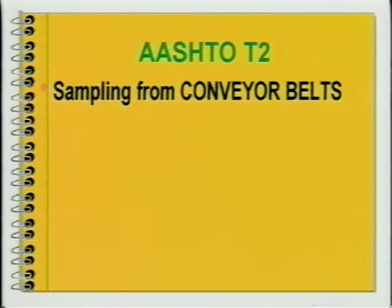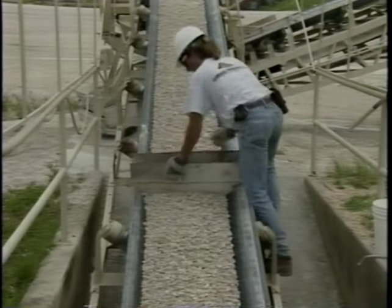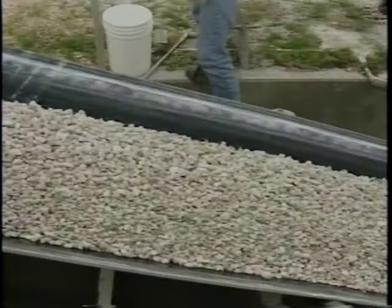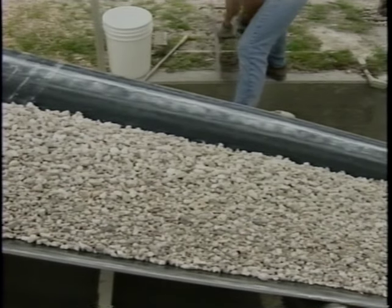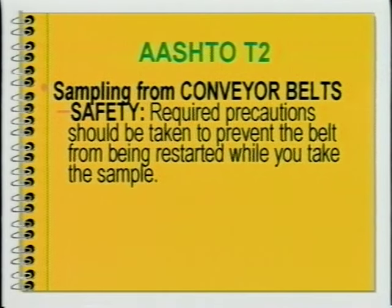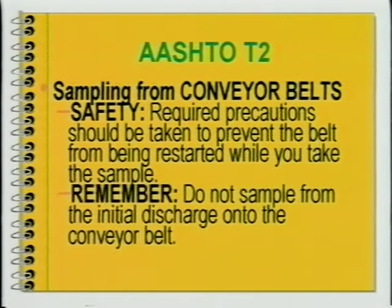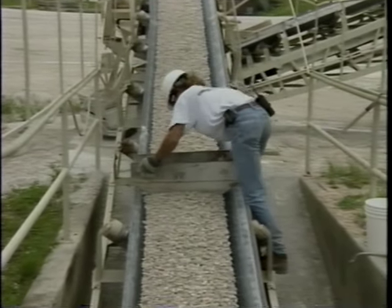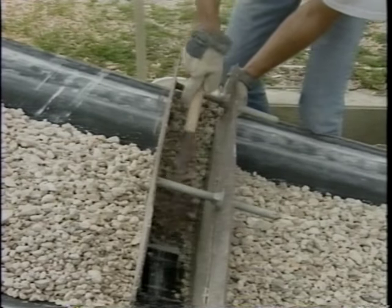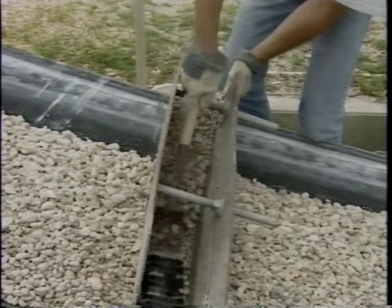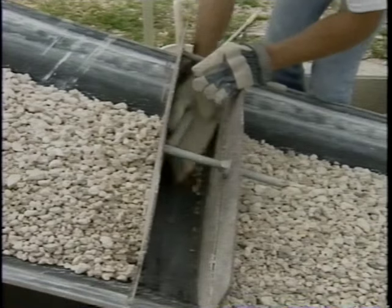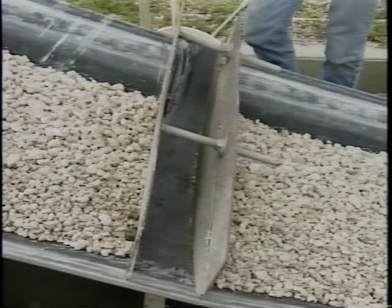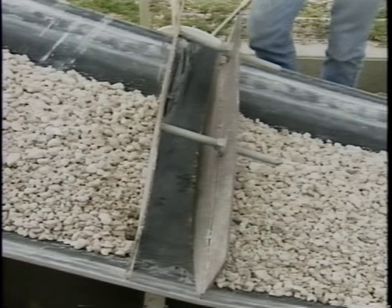Let's begin with taking samples from conveyor belts. There are two types of belt samples: belt cross section and belt discharge. Belt cross section samples should be taken while the belt is stopped. Required precautions should be taken to prevent the belt from being restarted while you take the sample. Remember, do not sample from the initial discharge onto the conveyor belt. Based on the load on the belt, select places on the belt for the templates and insert them all the way to the belt. Sample between the two templates. Collect all of the material on the belt between the two templates and place it in the field sample container. Use a brush to collect all of the fines. Repeat this sampling procedure for a minimum of three belt samples from three belt locations, separated by sufficient distance and time, and combine them into one field sample.